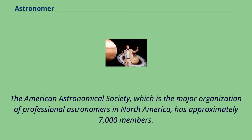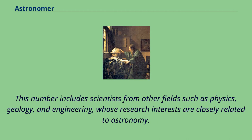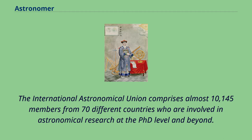The American Astronomical Society, which is the major organization of professional astronomers in North America, has approximately 7,000 members. This number includes scientists from other fields such as physics, geology, and engineering, whose research interests are closely related to astronomy. The International Astronomical Union comprises almost 10,145 members from 70 different countries who are involved in astronomical research at the PhD level and beyond.